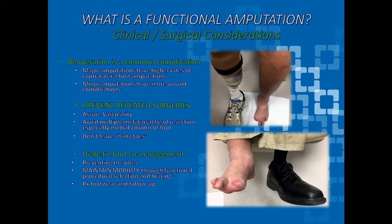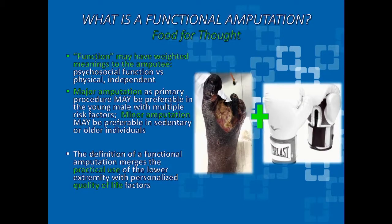In closing, there are surgical and clinical considerations. Reoperation is a common complication, specifically in partial foot amputations, so let's do the definitive procedure and prevent multiple amputations of the foot. Major amputations also have higher contralateral foot complication rates and high mortality rates themselves. Ways to prevent repeated surgeries include addressing circulation, not amputating a hallux without non-invasive tests — an ischemic hallux is a very poor predictor of major three-vessel disease. Don't leave those hang toes; they're not functional. Co-management is a necessity. Function means different things to different people, but we must battle to save feet and prevent the below-the-knee amputation, which I still ultimately believe is in the best interest for the majority.